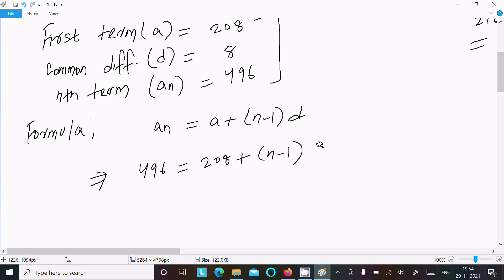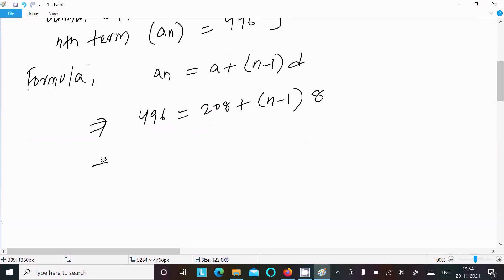So here writing the formula, nth term formula: an = a + (n-1) × d. Put the value. n value 496, first term is 208, n minus 1, D is 8.